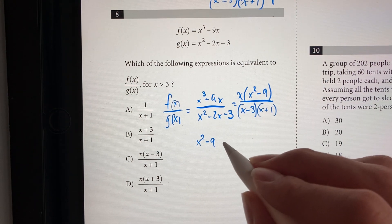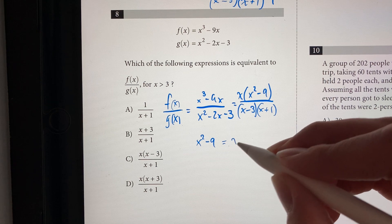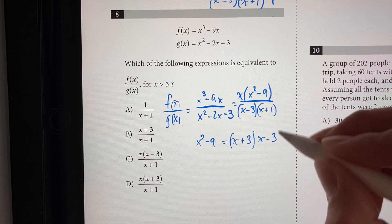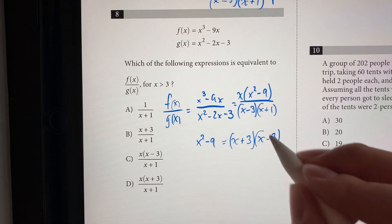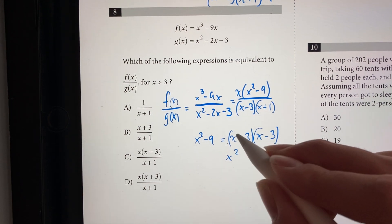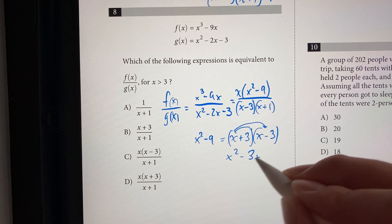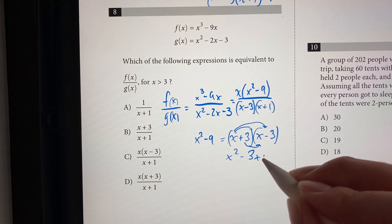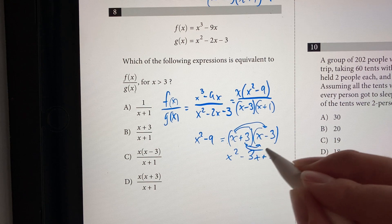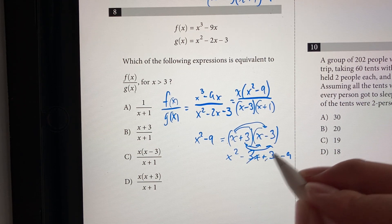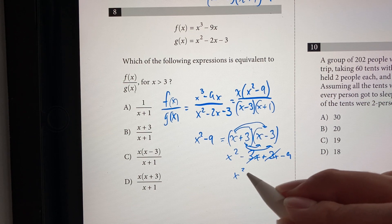x squared minus 9 is also equivalent to x plus 3 times x minus 3. And we can verify that by just multiplying it out. So we get x squared minus 3x and then FOIL plus 3x minus 9. So the minus 3x and the plus 3x cancel. So we get x squared minus 9.